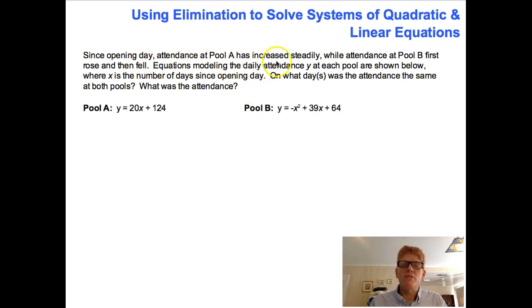Since opening day, attendance at pool A has increased steadily while attendance at pool B first rose and then fell. Equations modeling the daily attendance y at each pool are shown below, where x is the number of days since opening day. On what day was the attendance the same at both pools, and what was the attendance? So two things we want to note: that pool B, the attendance first rose and then fell, that's going to be our parabola. And then also, on what days was the attendance the same at both pools? That's where we're looking for those lines to intersect. And then what was the attendance? We'll be finding either the x or the y coordinate.